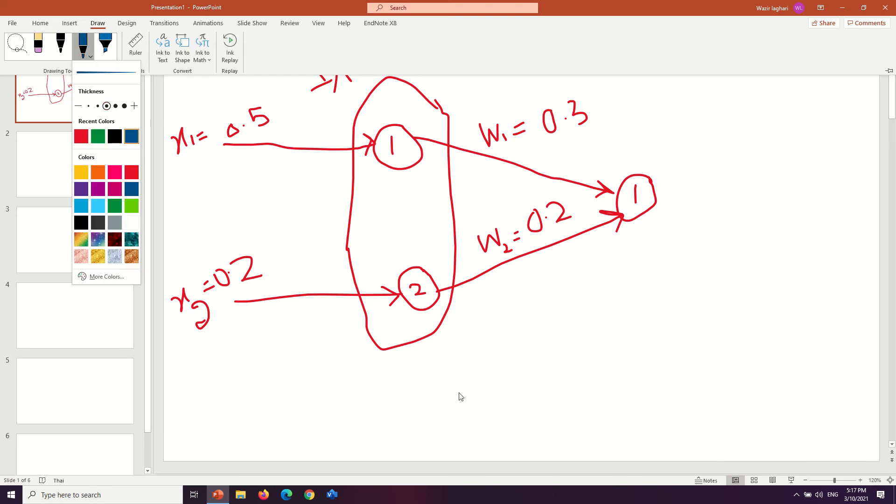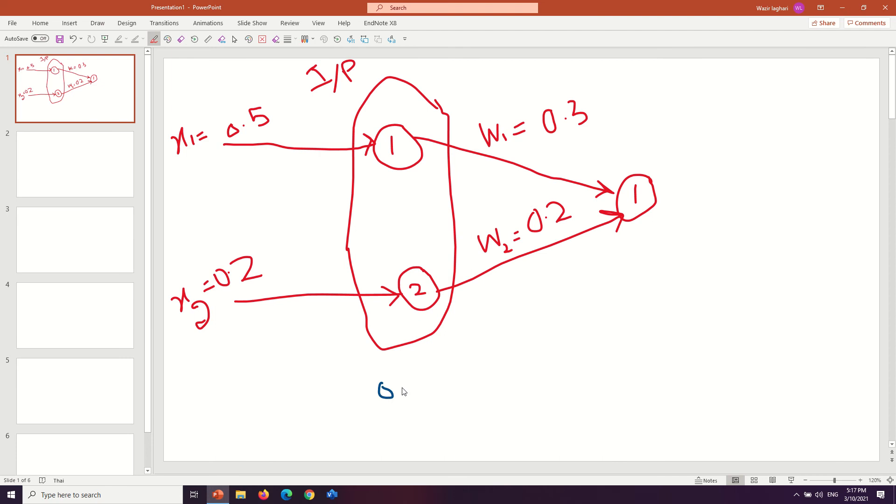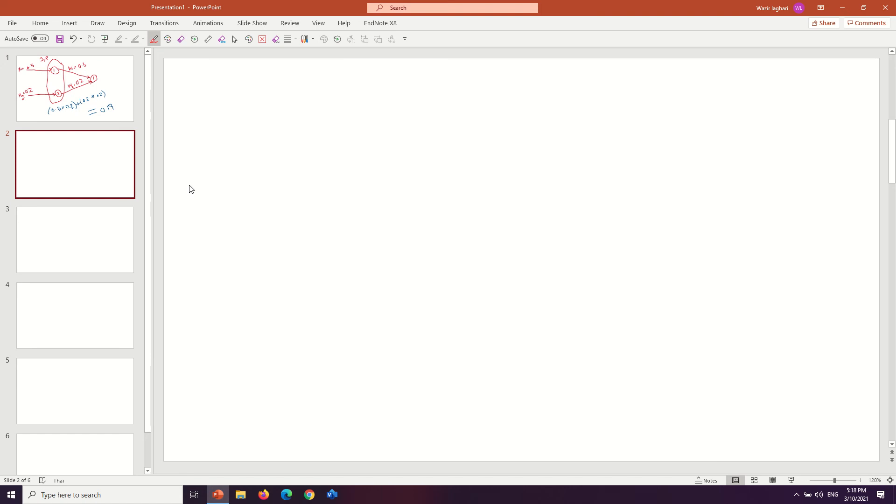The operation is very simple: you just multiply and sum the results. So it's 0.5 multiplied with 0.2, and you get a result around 0.19. Similarly, in another case, if you have